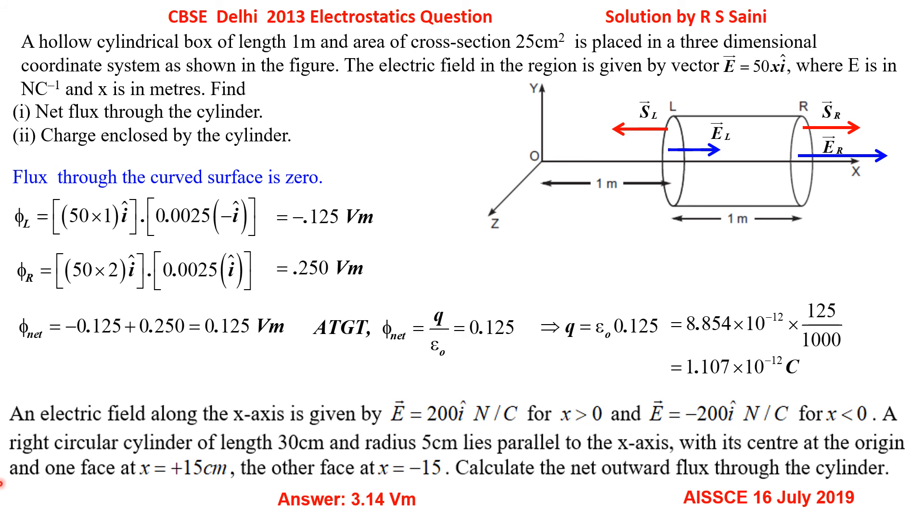Again a right circular cylinder of length 30 centimeter, length is 30, and radius 5 centimeter, radius is 5 centimeter. That means area is again 25 centimeter square. Lies parallel to x-axis. Similar situation, just this cylinder is to be shifted.